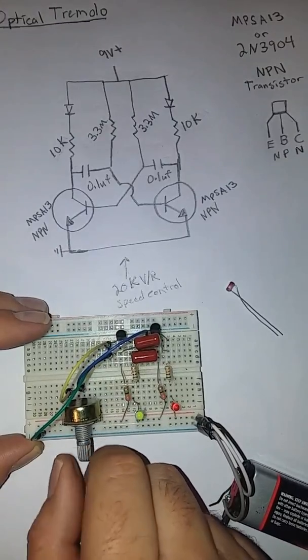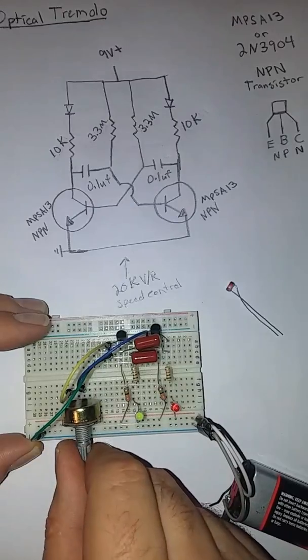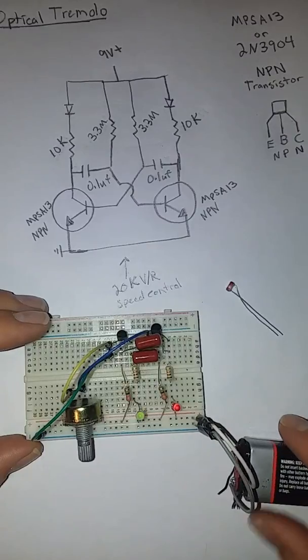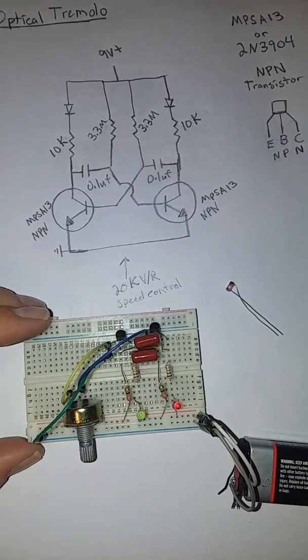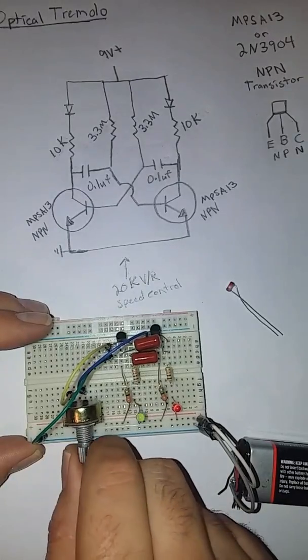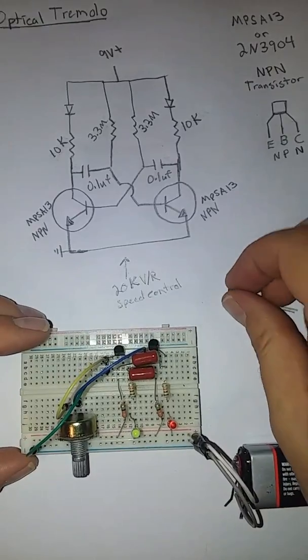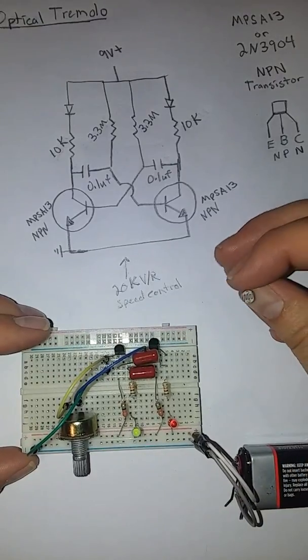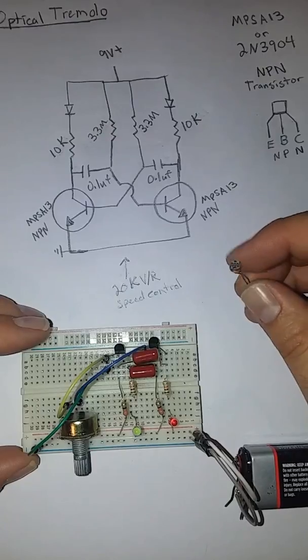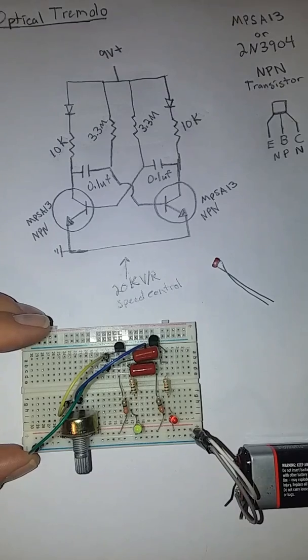We can turn it up this way and it will go faster. You can turn it down this way and it will go slower. So that's how you make a flashing light circuit with a variable speed. Next time maybe we'll try to get this photo resistor hooked up with our input and output. And plug a guitar in and check out the tremolo sound that we can make. Thanks for watching.